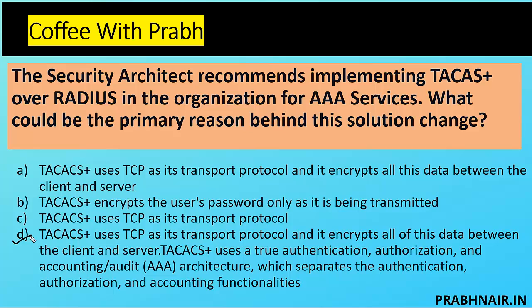The closest option is D because A is covered within D as a complete description. In RADIUS, triple-A services are configured on one server, but in TACACS+ you have the option to customize — dedicated authentication, authorization, and accounting servers separately. That key capability is what TACACS+ offers. It is a Cisco proprietary protocol; the open-source alternative is Diameter. Summary: TACACS came first, then open-source RADIUS, but RADIUS had limitations with UDP, no customization. TACACS+ addressed those but was costly, so Diameter was introduced.